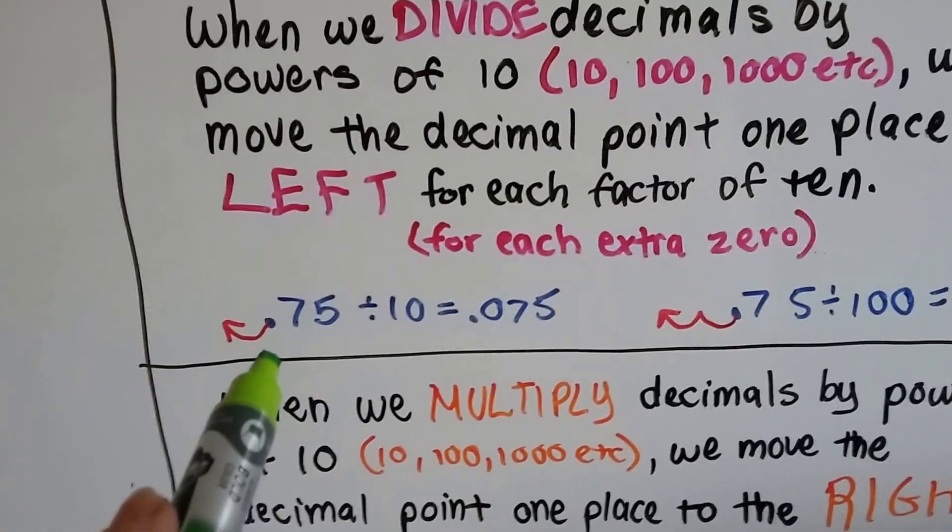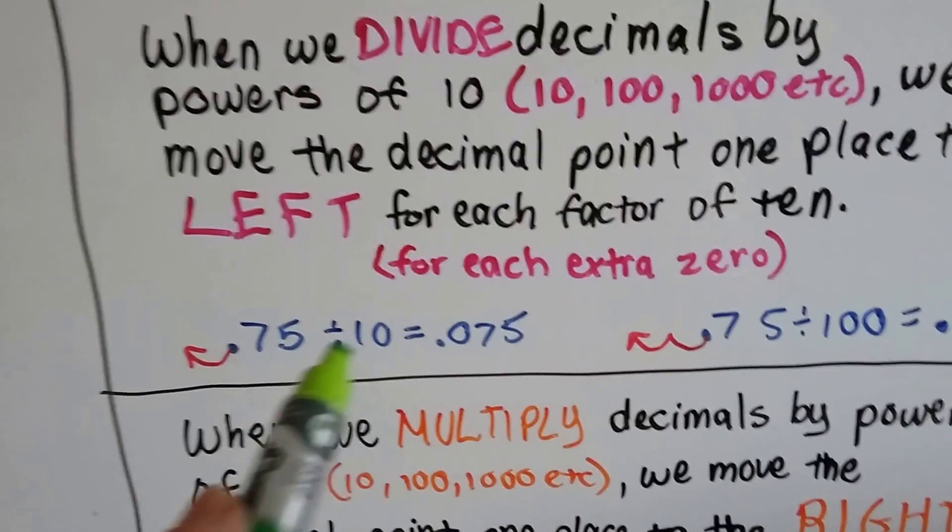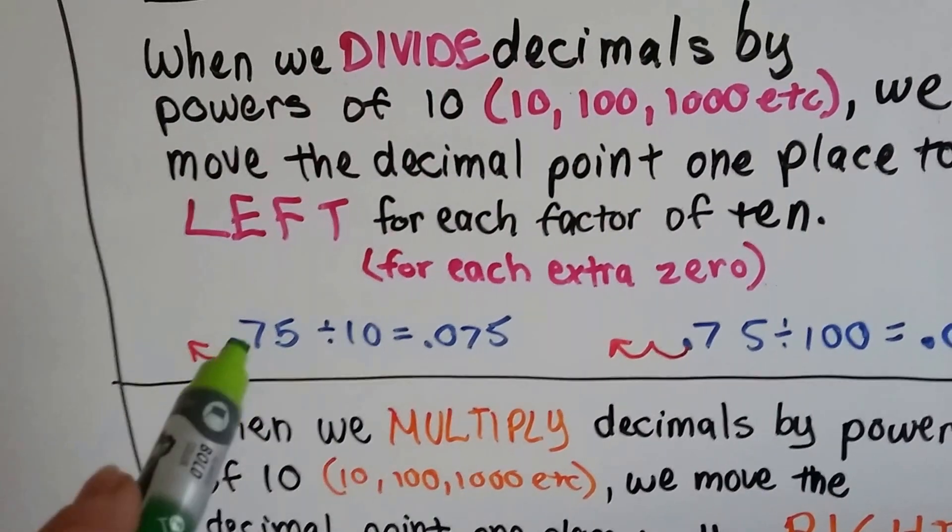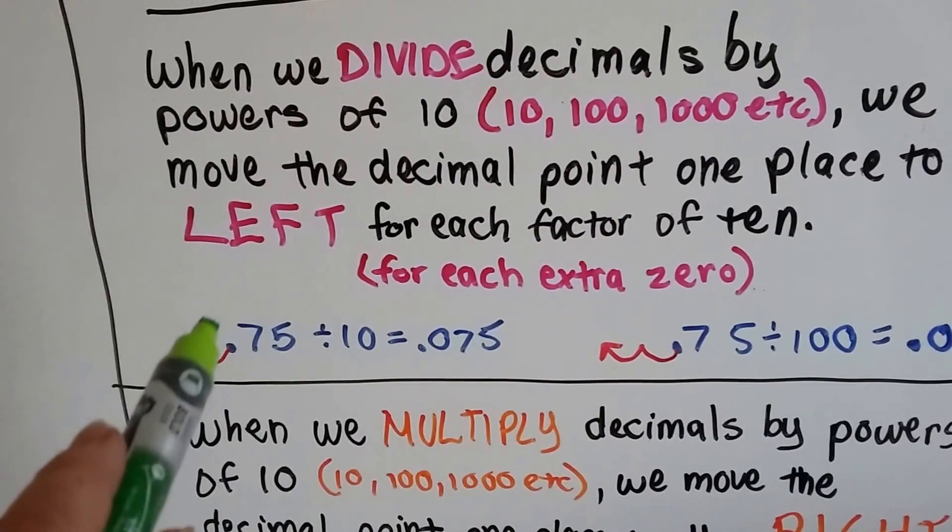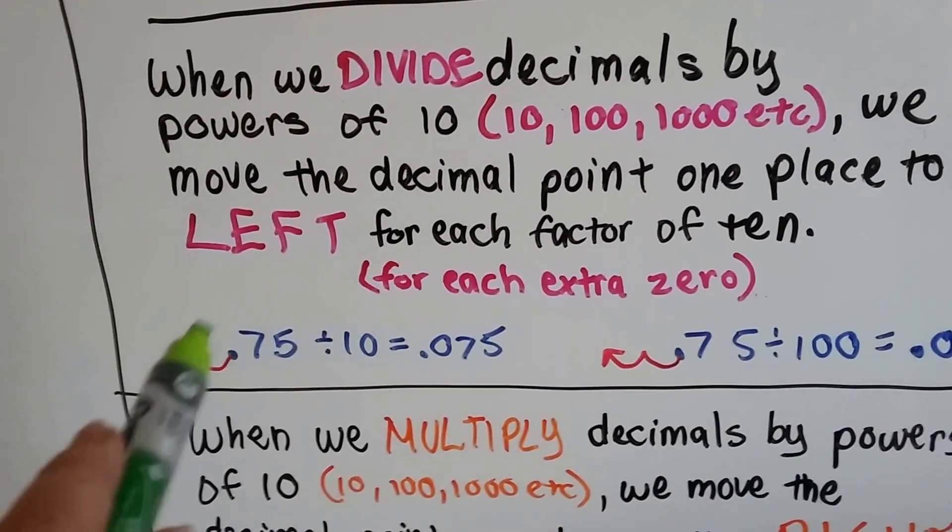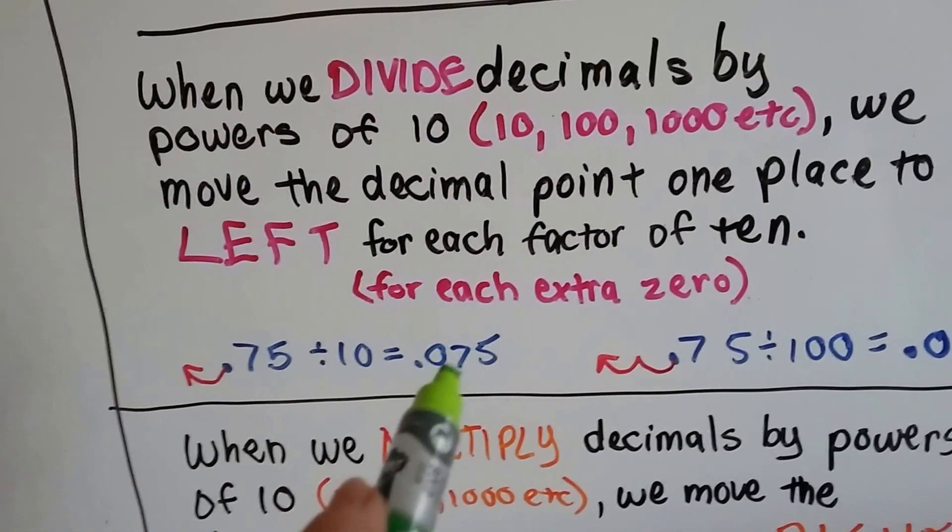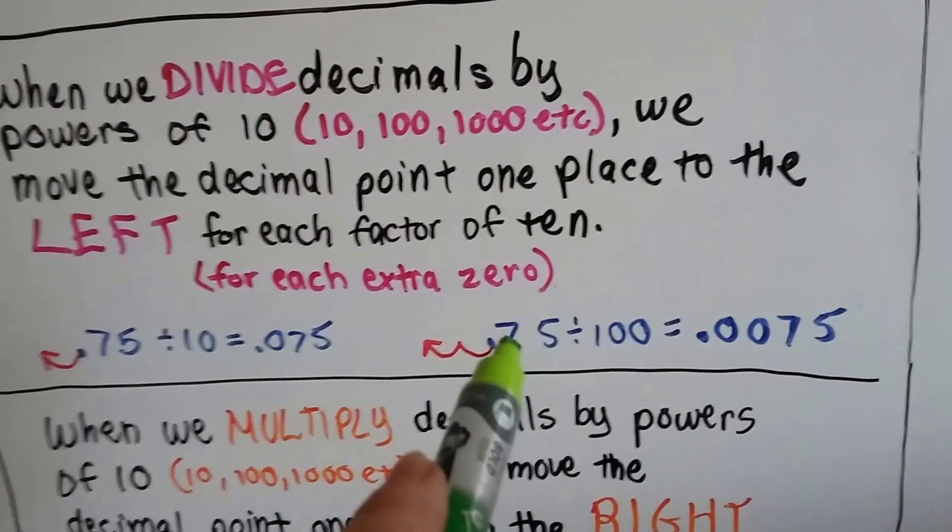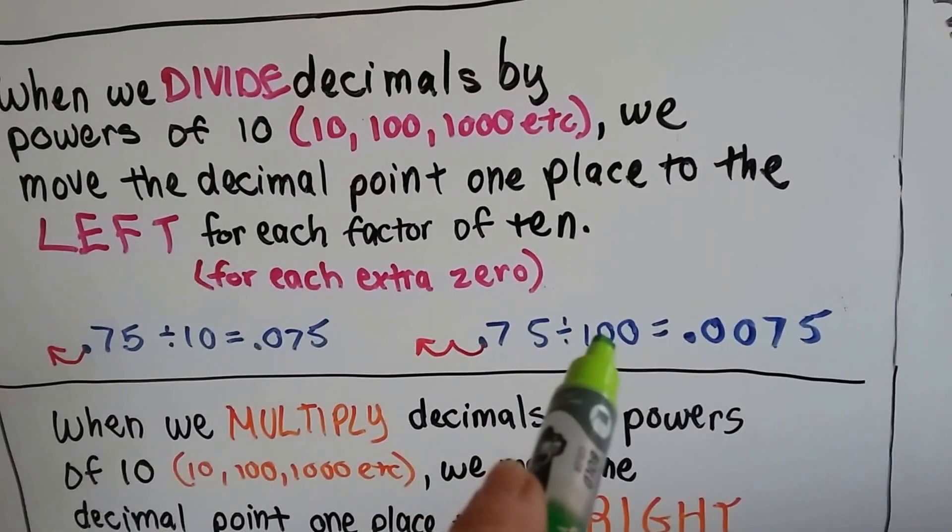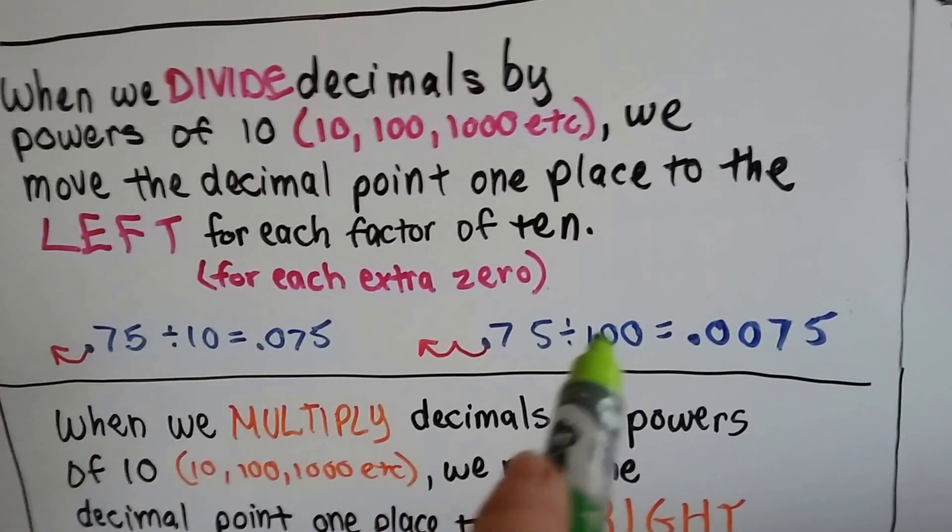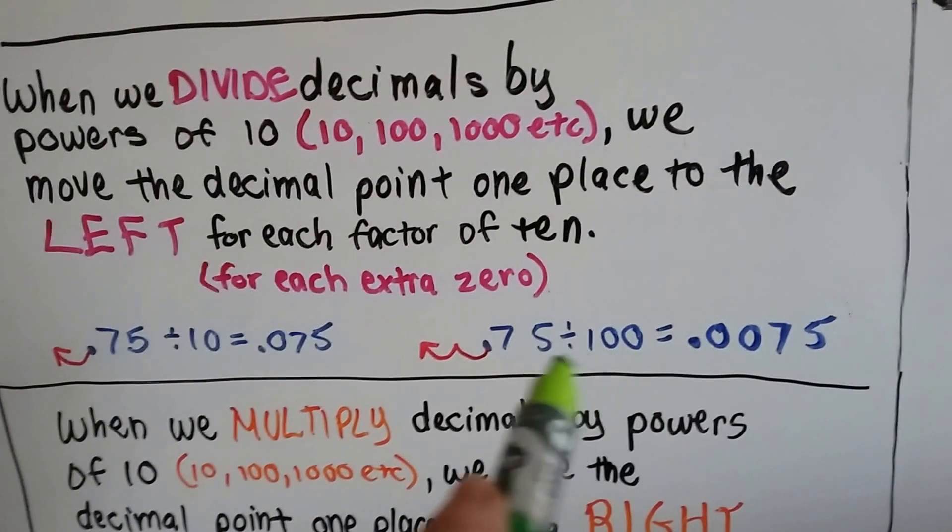So .75 divided by 10. We're going to move it left. So it's going to go that way away from the 75. Which means we have to put a zero there as a placeholder. So it becomes .075. If we have .75 and we divide it by 100, this was 10.